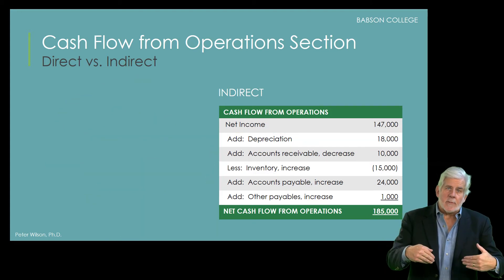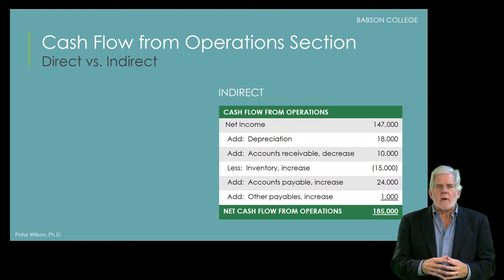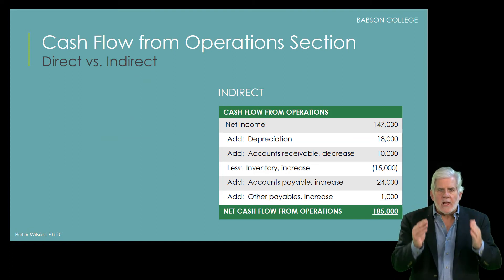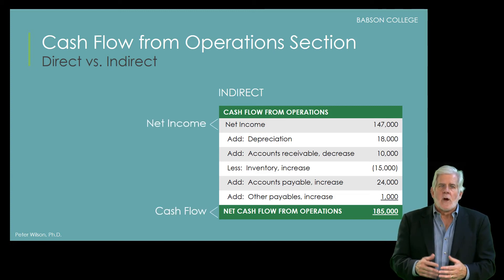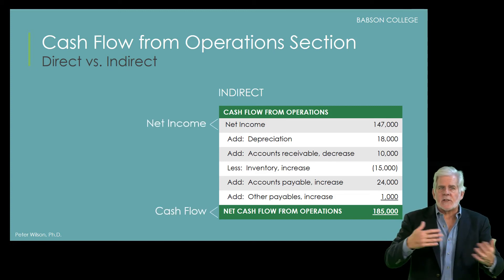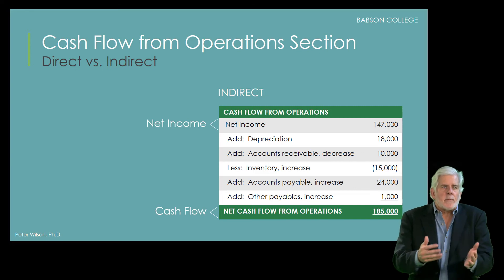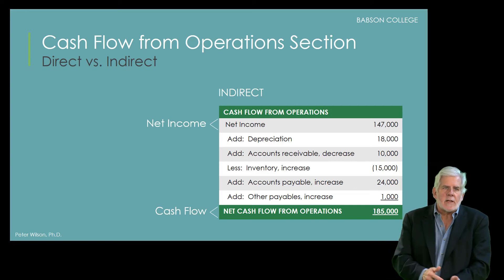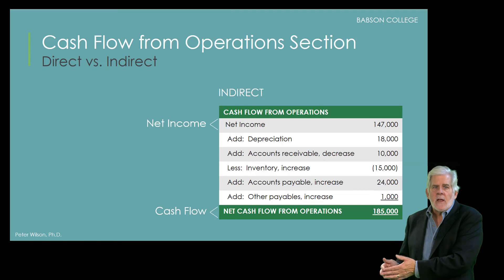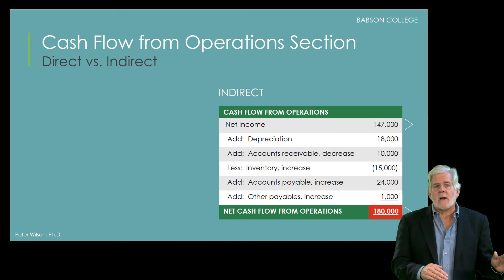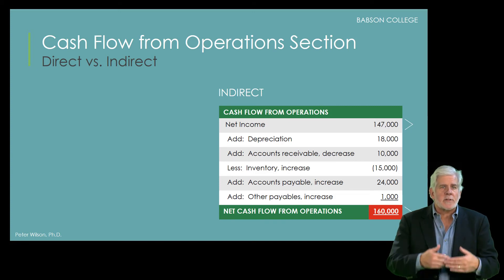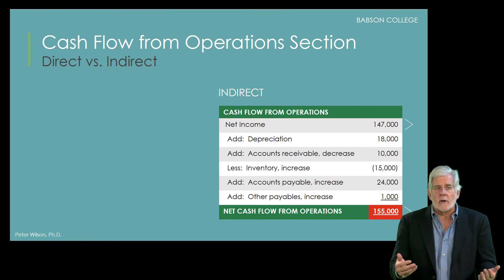For our purposes, your focus when viewing an indirect cash flow statement should really be on the relation between net income and cash flow from operations. One would hope that over time, the pluses and minuses would average out and there'd be a pretty strong relationship between net income and cash flow. If cash flow from operations starts to decline without a similar decline in net income, that could be a red flag that the firm is having a hard time collecting cash from its customers or, even worse, may be manipulating the financial numbers.